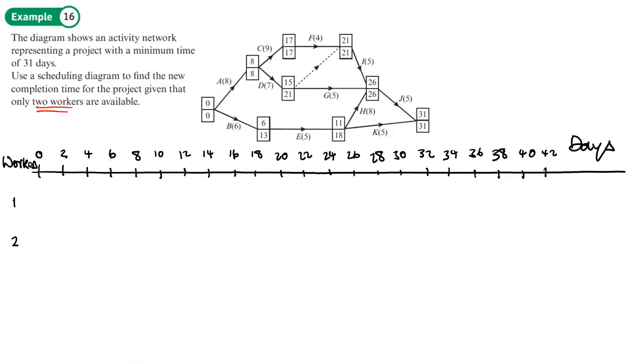I know I'm only going to have two workers. We'll start with activity A here, that's going to take 8 days. Activity B needs to start and that's going to take 6 days. We'll tick them off as we've done them. Now we can either go from activity C or D from A, but C has no float. So we're going to put C in because there's no float and that's got a length of 9 to take us up to 17.